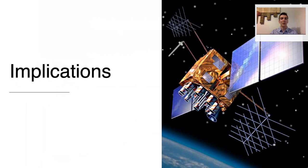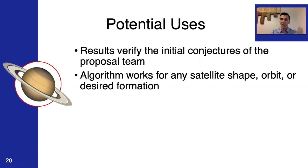What are the implications of all of this? Like, what other uses does this have? The computations that I've conducted ultimately verify the initial conjectures of the proposal team and figured that this was a reasonable possibility. Ultimately, it demonstrates that a cluster of satellites starting at the same position after just one launch can organize into a string of pearls formation through just the use of drag and attitude changes alone. Ultimately, the algorithm I developed to solve this in the manner outlined above can be applied to any satellite mission design or purpose. It works for really any given satellite shape, orbit, or desired formation that you really need.